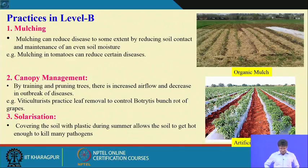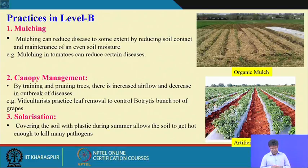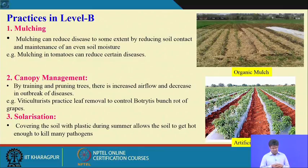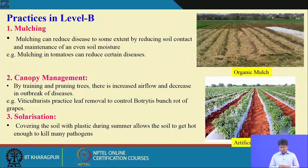Solarization involves covering soil with plastic during summer, allowing the soil to get hot enough to kill many pathogens. Some beneficial pathogens may also be killed in the process. Black plastic mulch during cropping does not allow weed growth and kills many pathogenic organisms.